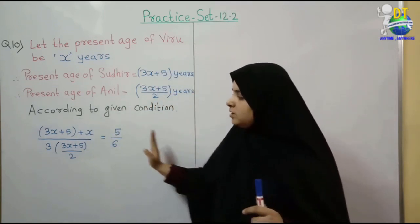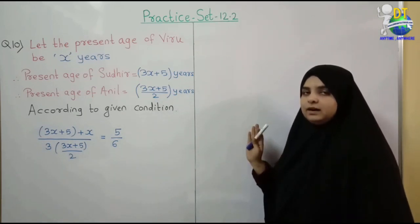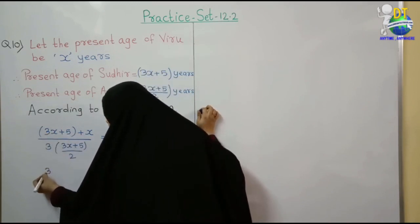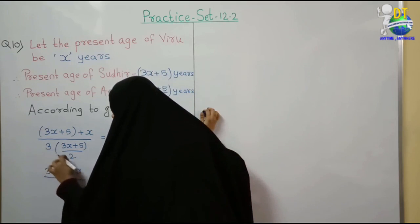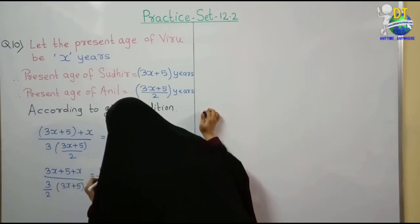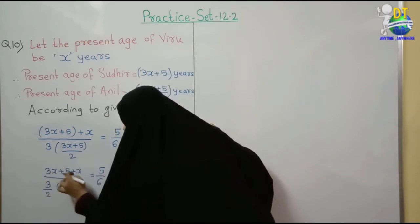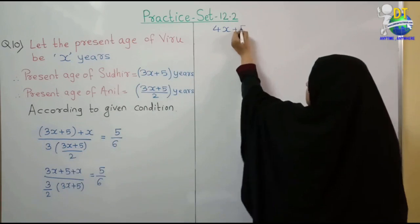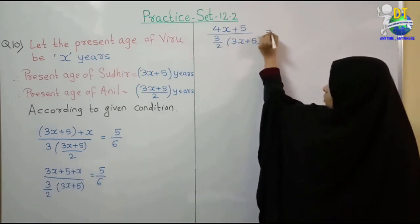यह clear है student? अब इसको solve करना है. पहले bracket open करो — 3x और 1x like terms: 3+1 = 4x, plus 5 as it is. Denominator में — (4x+5) divided by (3(3x+5)/2) = 5 upon 6. a upon b = c upon d — cross multiplication करना है. इसको 6 से multiply करो।